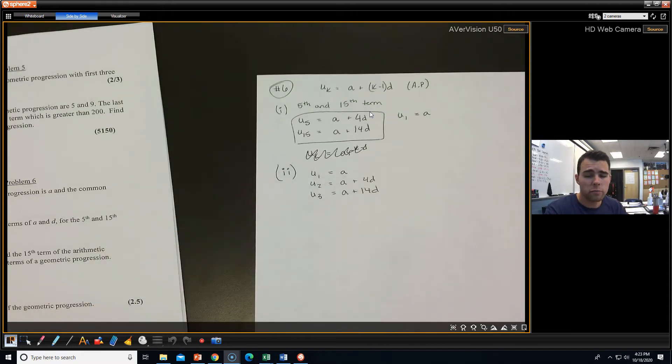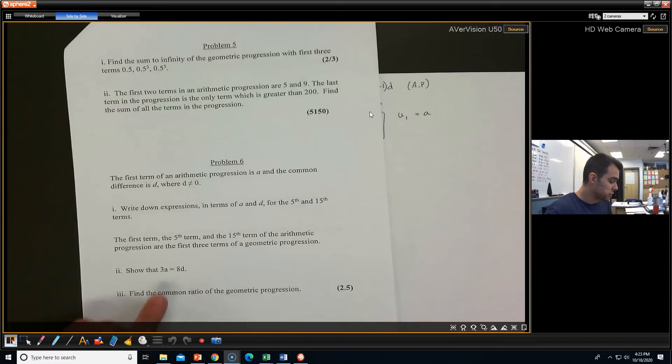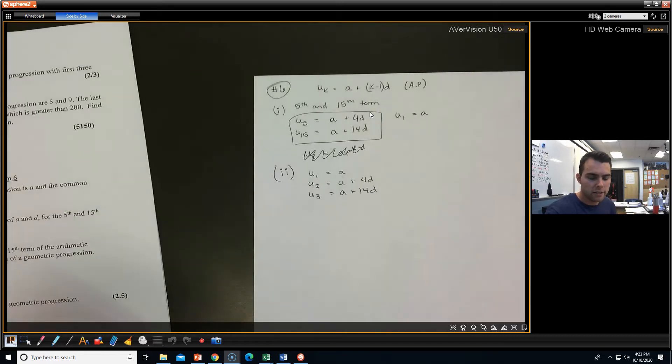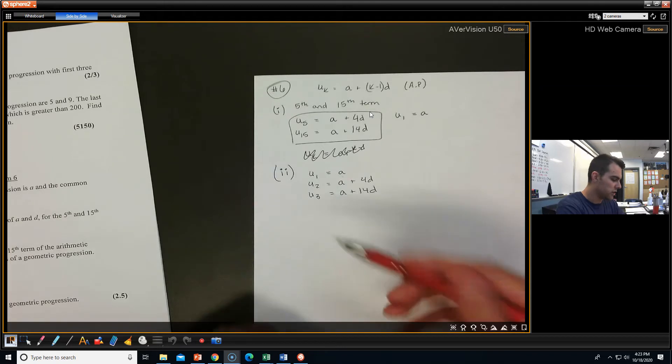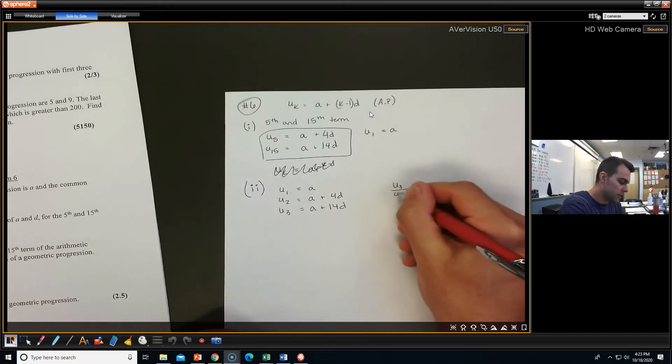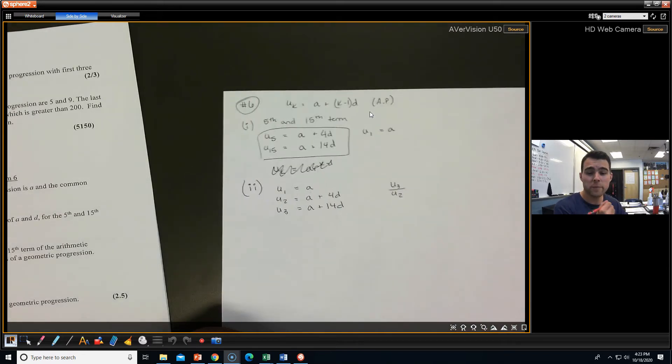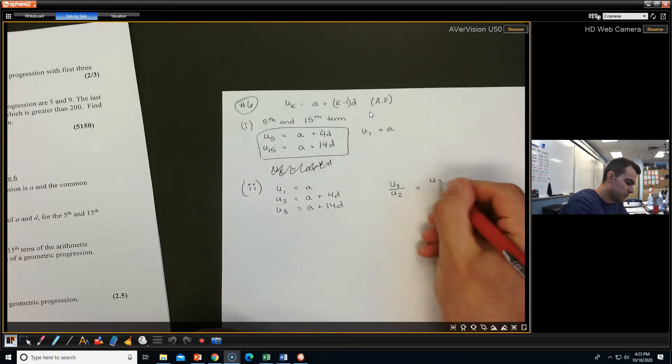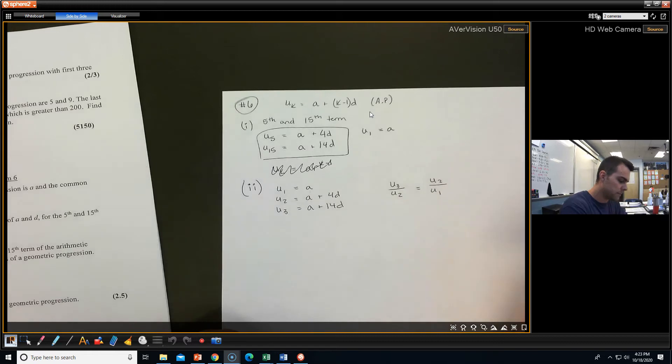We don't know what these terms are. We don't know what A is. We don't know what D is. And it looks like when we show this, we're still not going to know what A and D are. But since it's geometric, we do know that they have a common ratio. And to find that, we do U sub 3 divided by U sub 2. And that should be the same as U sub 2 over U sub 1.